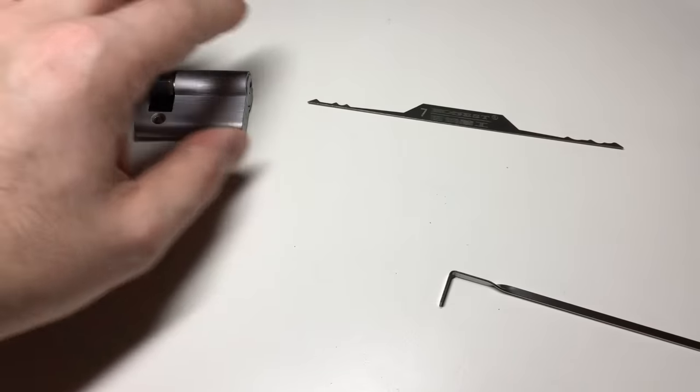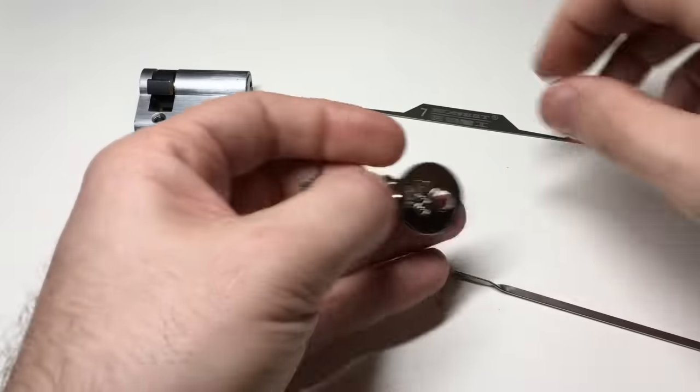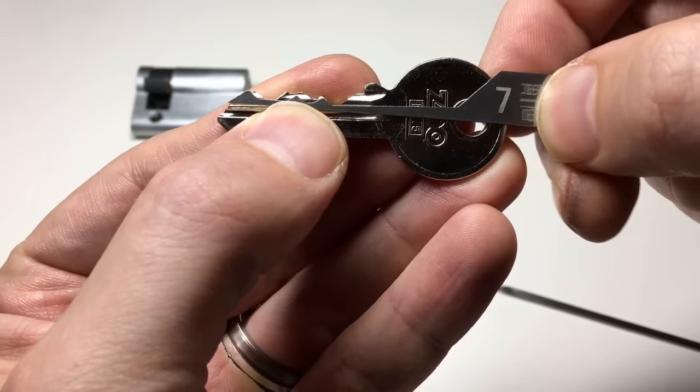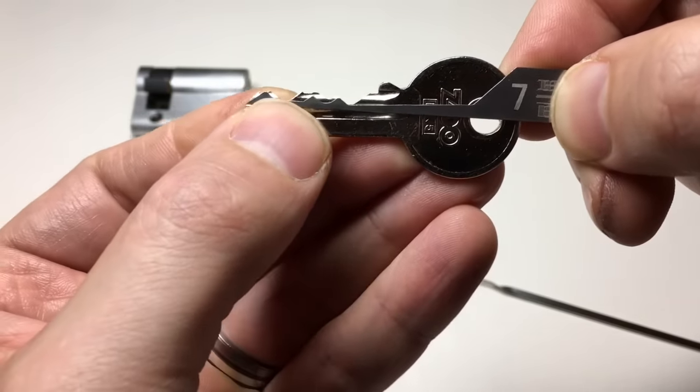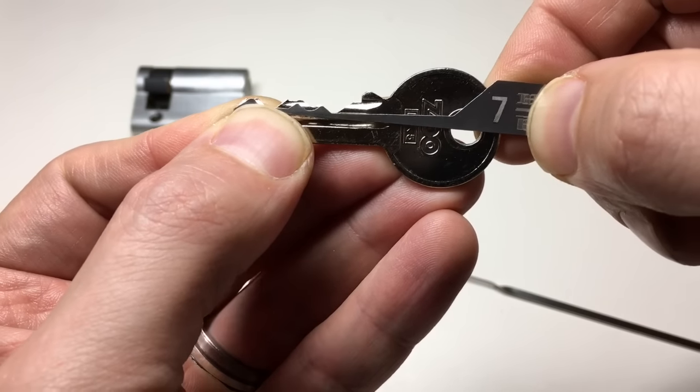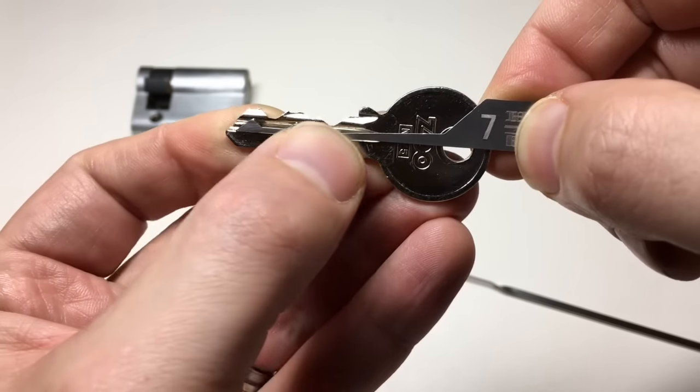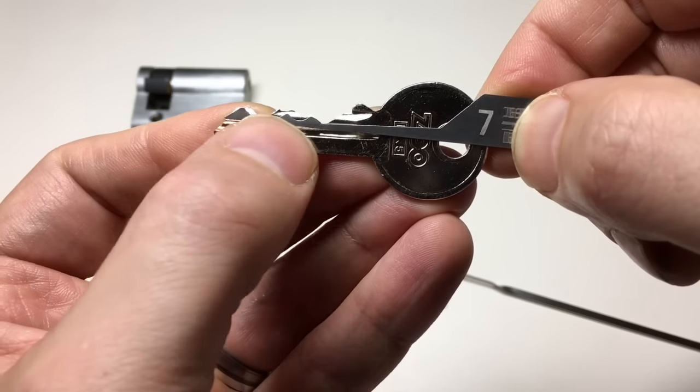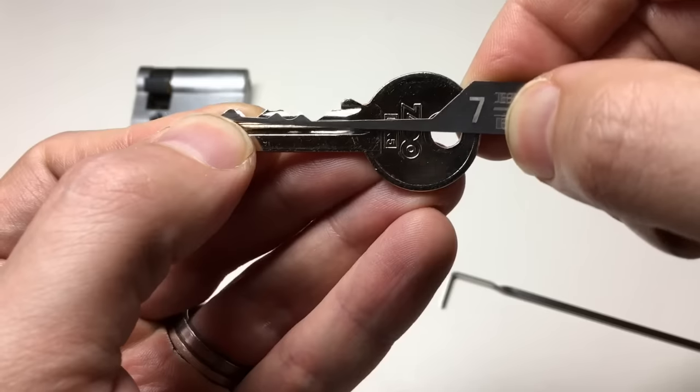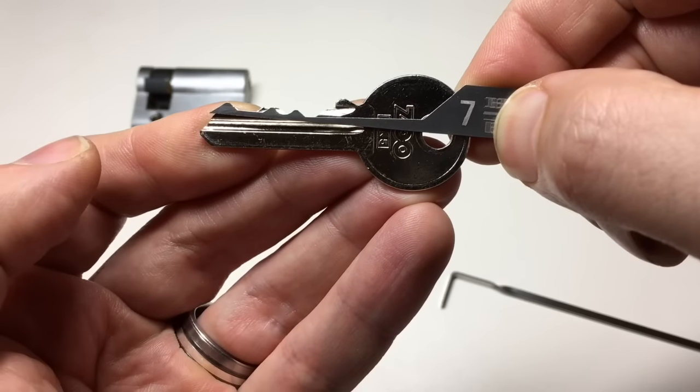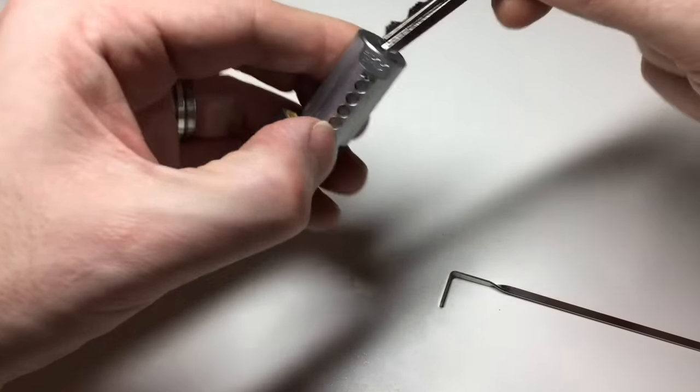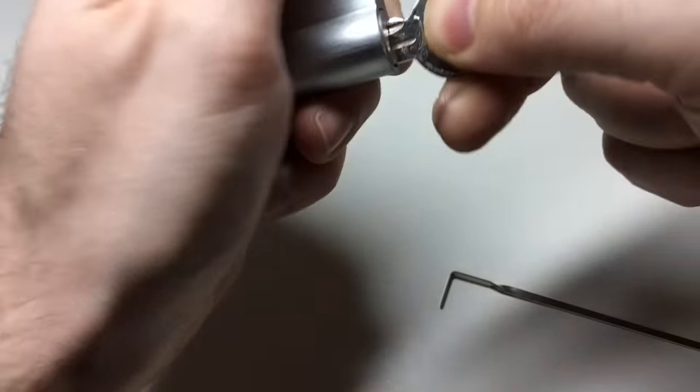That was a number seven, that was a Euro lock. Why did that work? Let's have a look at the key. You should see here that the biting on the key and the wave profile on the pick do line up. So you can imagine if I'm in there, the first peak will match up with pin two, the second with pin three, and the third with pin five. That's what we're trying to do. Offer up the right angle, the right position in the lock to replicate the key so that it does indeed work.